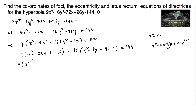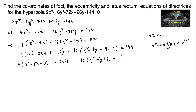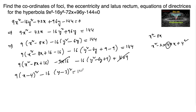So we write: 9(x² - 8x + 16) - 9×16 - 16(y² - 6y + 9) + 16×9 = 144. The terms 9×16 and +16×9 cancel each other, giving 9(x - 4)² - 16(y - 3)² = 144.